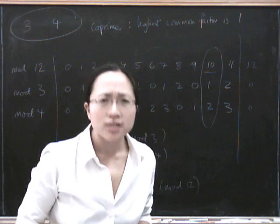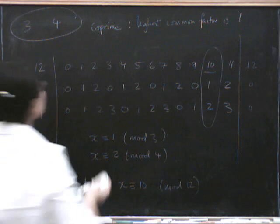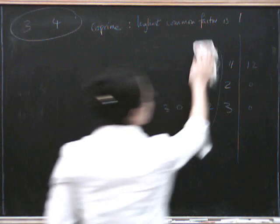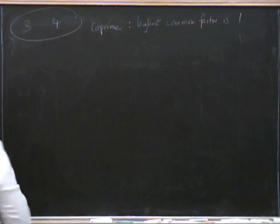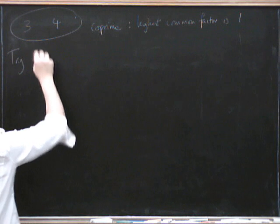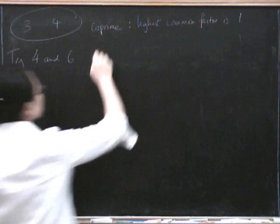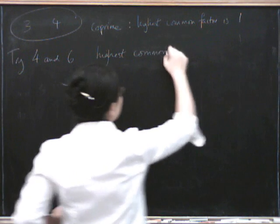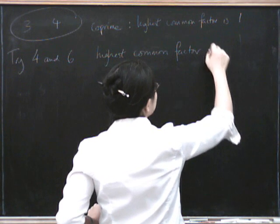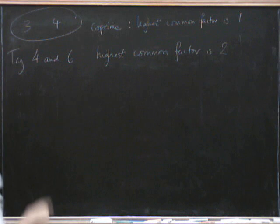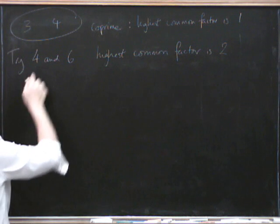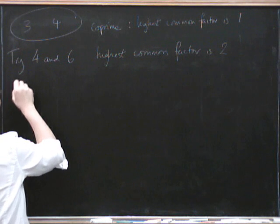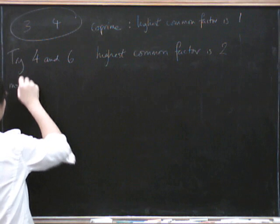So now, let's have a look at one where the highest common factor is not 1, and see what happens. So let's try doing 4 and 6. The highest common factor is 2. Okay, so now, if we tried doing it by 4 times 6, we'd get 24. So let's just have a look at mod 24.